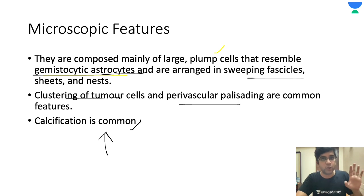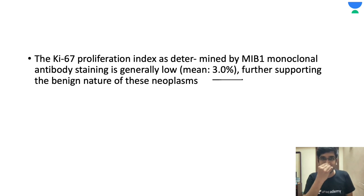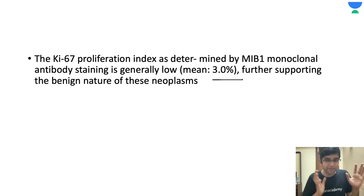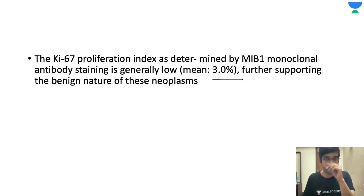To prove the low-grade benign nature, even if you do a Ki-67, the average Ki-67 is 3%. A grade three tumor would never have 3% Ki-67. Undoubtedly, it's a very low-grade tumor with an extremely good prognosis. So I have a preliminary diagnosis based on the fascicular arrangement, the spindle-shape architecture, and the pink cytoplasm — a preliminary diagnosis of subependymal giant cell astrocytoma. Now I have to prove it.